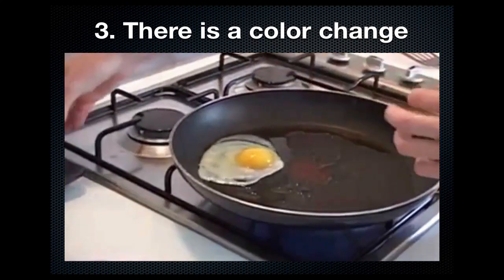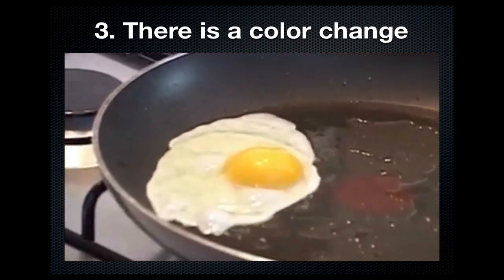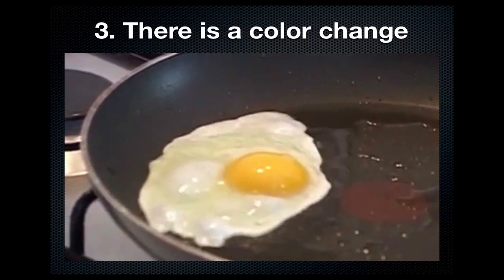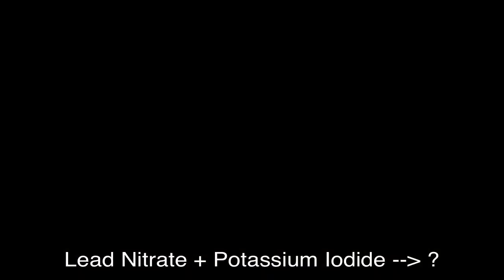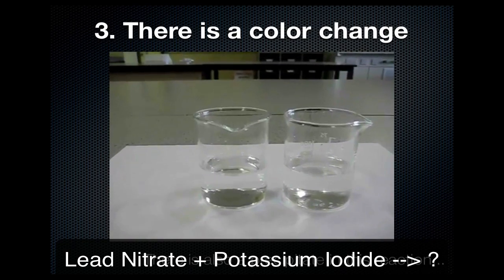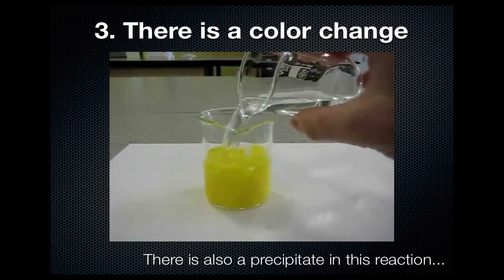There also might be a color change. When you crack open an egg, the egg white is actually clear, but when you cook it you're denaturing proteins and causing a chemical change — you won't be able to get that clear egg white back. That egg is now cooked. Another example of a color change is lead nitrate and potassium iodide. Each of these solutions are clear, but when mixed together they form a precipitate that's yellow.